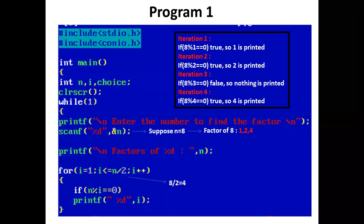Program 1. In the main function, we have declared three integer variables: n, i, and choice. Now the control comes to the while loop. While with 1 in parenthesis — 1 means the condition is always true. Now in the while loop, the printf statement prints 'enter the number to find the factor.' Using scanf, the user enters the value of n.